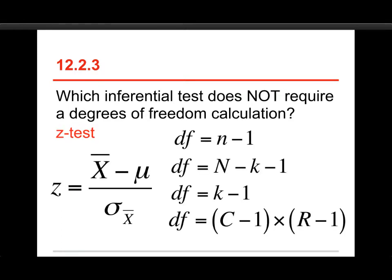Let's take a quick look here. There's the z-formula on the side, and you see we get the sample mean minus the population mean mu, and we divide by the standard error, which does not involve a degrees of freedom. It's the standard deviation divided by the square root of the sample size. On the right, on the other hand, we have a whole bunch of different degrees of freedoms.